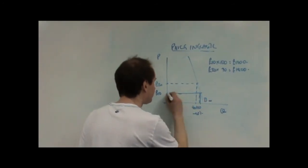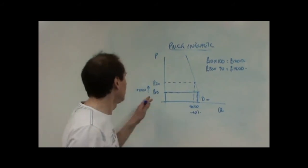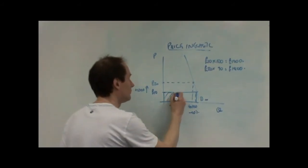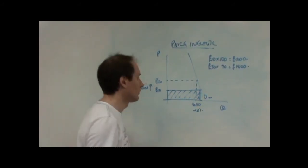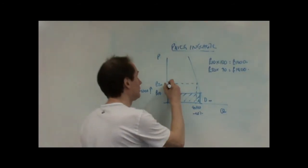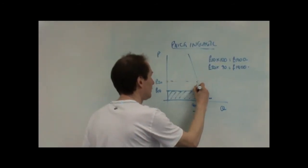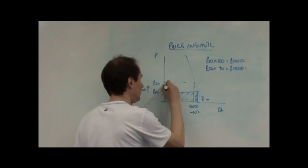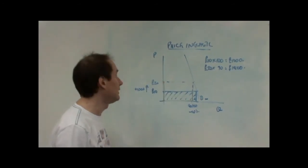Originally, the firm had £10 times 100 units. After, £20 times 90, £1,800.